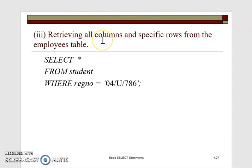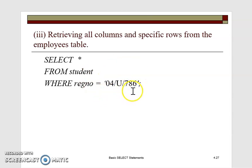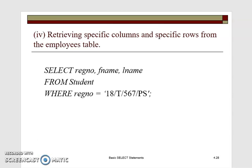Where you want to retrieve all columns but only specific rows, you say SELECT * FROM students WHERE registration number is a specific value. This will return only one row because registration number is a primary key and therefore cannot have repetitive values. You can also retrieve specific columns and specific rows by defining the particular columns in your SELECT statement along with the WHERE condition.